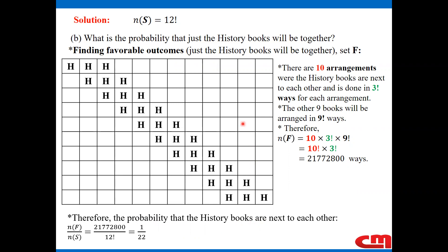In summary, the key approach is understanding that when items must stay together, we can treat them as a single entity — just as in other problems where a couple occupies two seats that are treated as one. This reasoning underlies both parts of the solution.